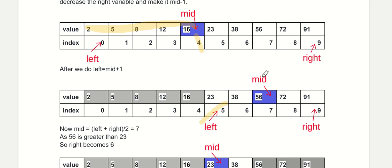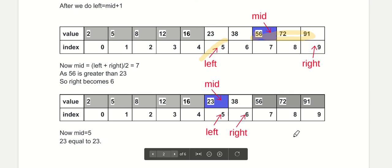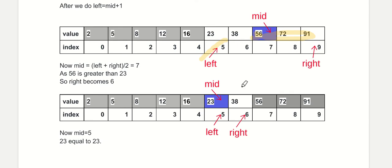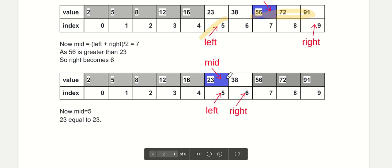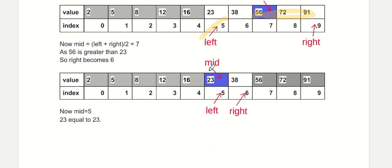Now mid also changes from 4 to 7, and at index 7 the element is 56. We compare 56 with 23. Since 56 is greater than 23, all elements to the right of 56 are also greater than 23 and are of no use, so we shift right to mid minus 1, that is 6. Mid then changes to 5, and at index 5 the element 23 is found. Our search ends and we have found element 23 at the fifth position.